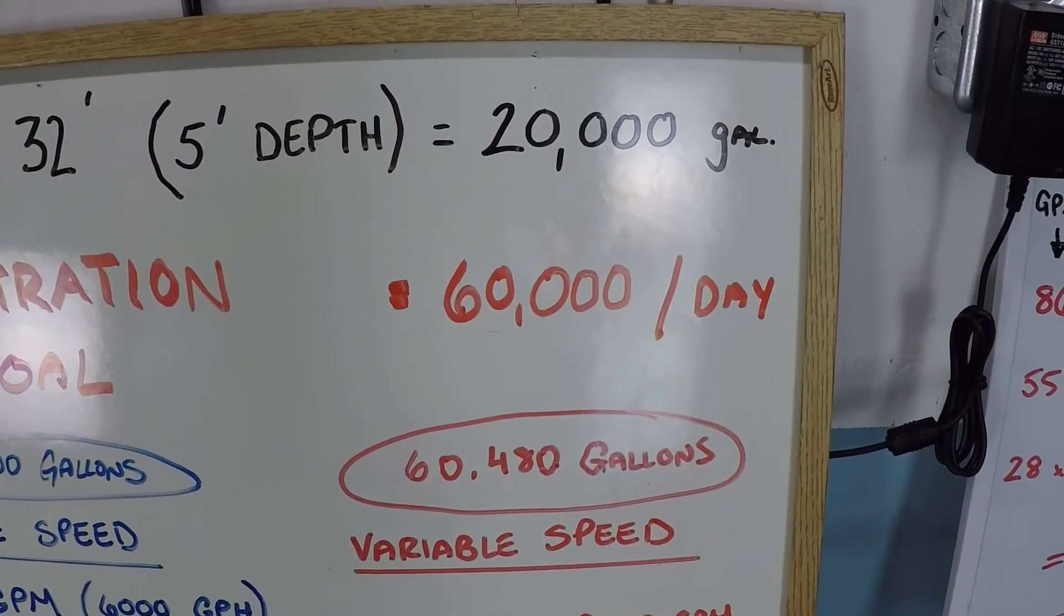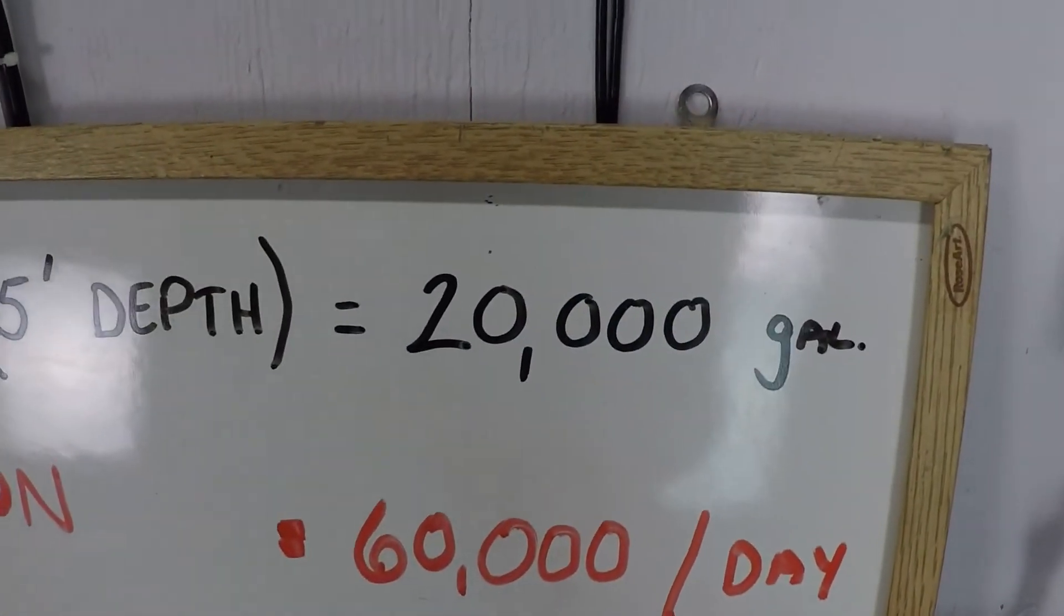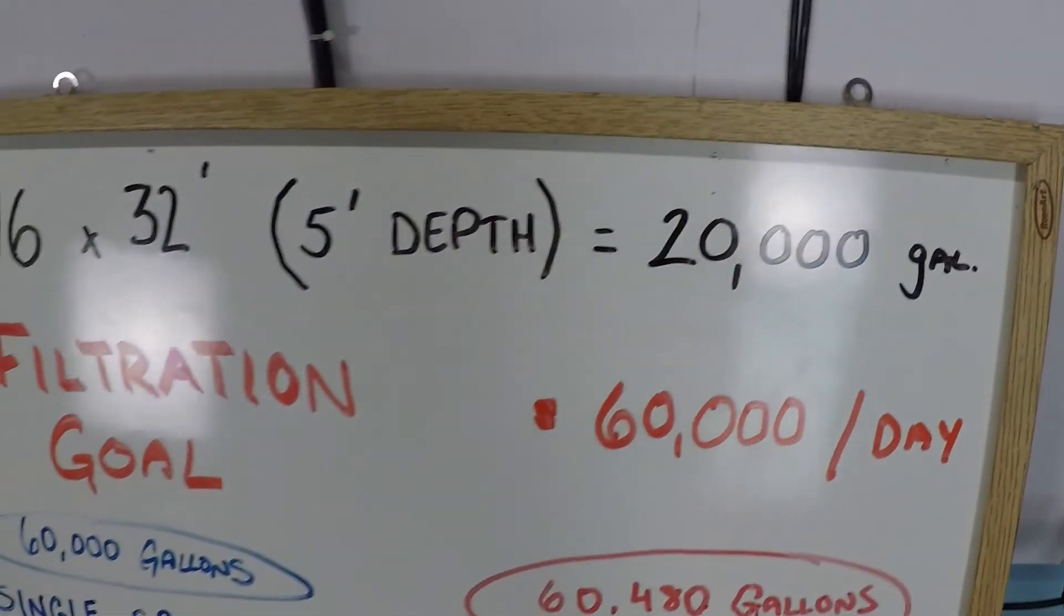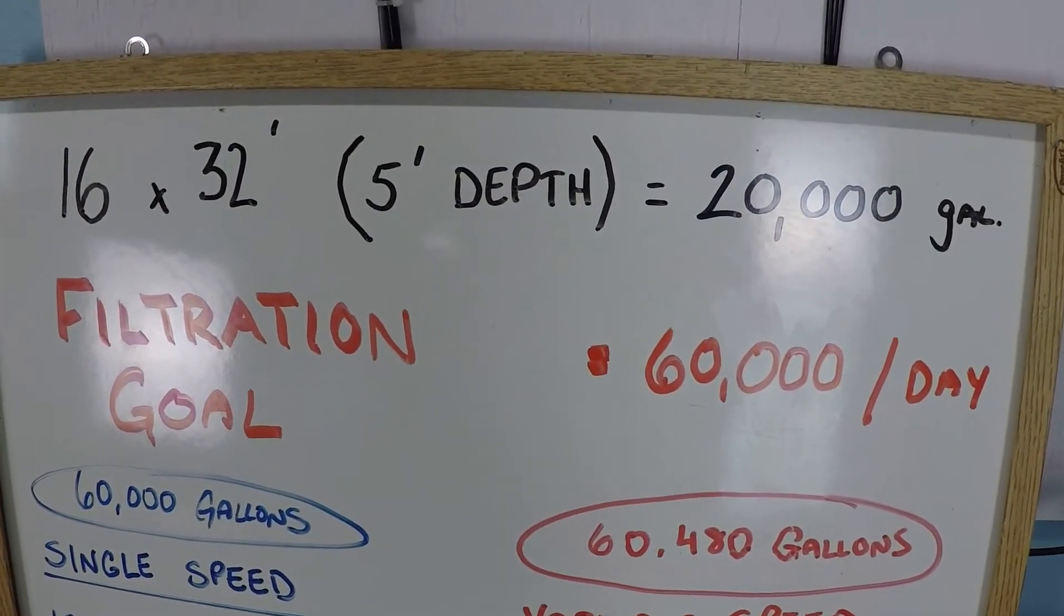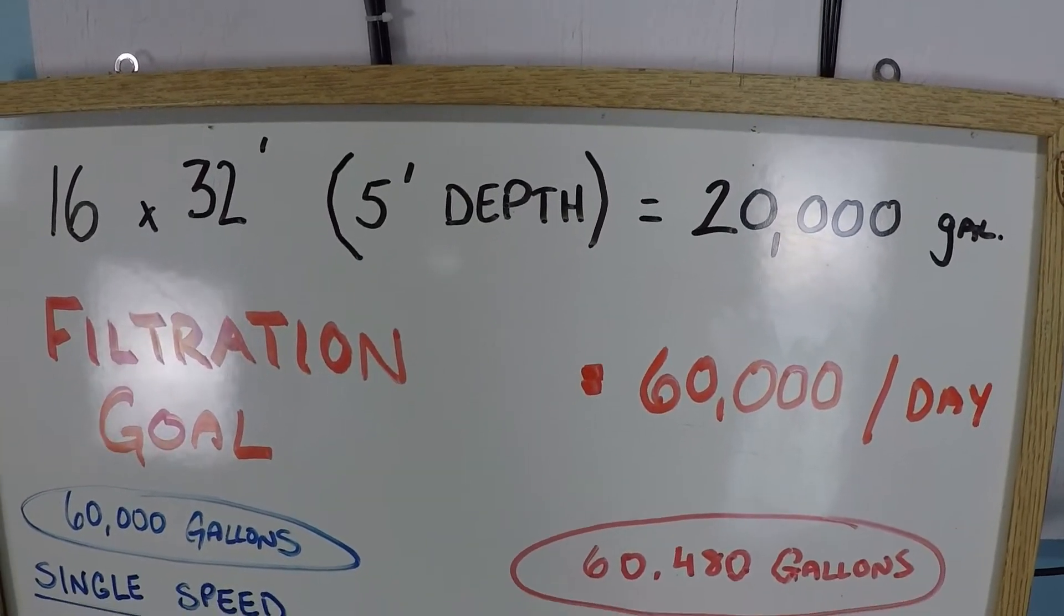You might be wondering, well why is it 60,000 gallons? You just said it's a 20,000 gallon pool. How much are you supposed to filter your water anyway? Well there is an answer to that, and the answer is you're supposed to filter all of your water every day.